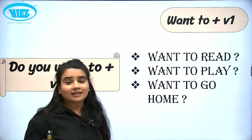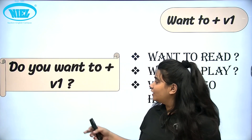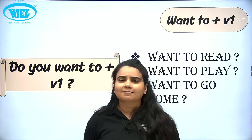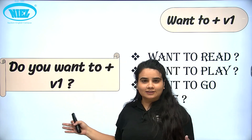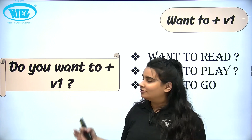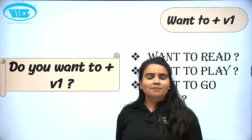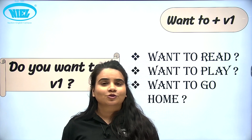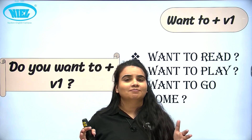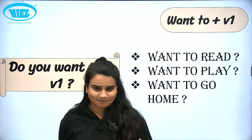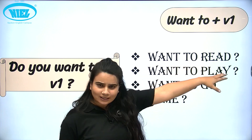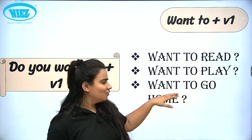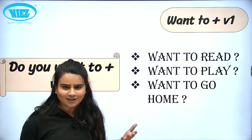Moving to next — 'do you want to?' and then we use the first form of verb. For example: kya aap padhna chahte ho? Do you want to study? Kya aap khelna chahte ho? Do you want to play? Kya aap likhna chahte ho? Do you want to write? But Hindi mein hum simply bolte hai: padhna chahta hai, khelna chahta hai, likhna chahta hai. So you can say: want to read, want to play, want to go home.